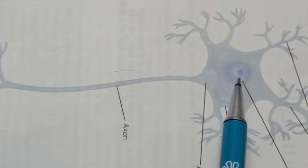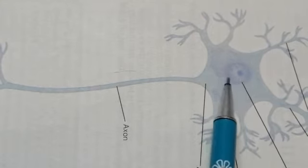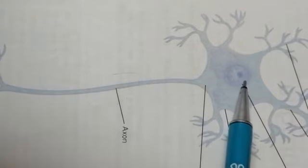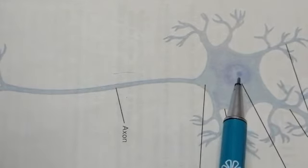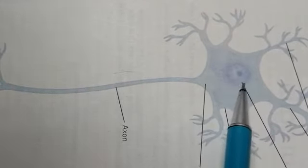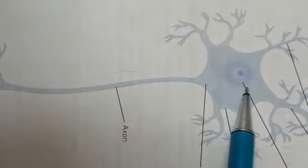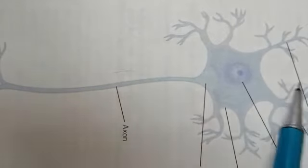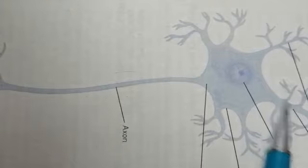These Nissl substances or Nissl granules in the nucleus of a neuron are responsible for protein synthesis. That is a function of the neuronal cell to synthesize different proteins which are important for the integration of the nerve impulse.